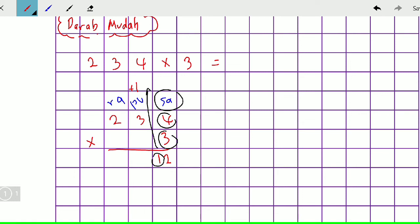Setelah itu, bila kita darabkan yang seterusnya, tiga darab dengan tiga, sembilan. Tiga darab dengan sembilan tambah dengan satu, dia dah jadi sepuluh.